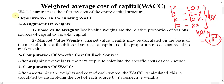There are a few steps involved in calculating WACC. Step number one — which is important and somewhat lengthy — is the assignment of weights. Assignments of weight can be made in two ways: based on book value and based on market value. Book value weights are the relative proportion of each source of capital to the total capital.